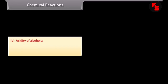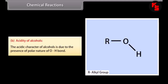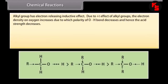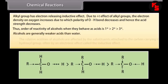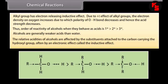The acidic character of alcohols is due to the polar nature of the O-H bond. Alkyl groups have an electron-releasing inductive effect. Due to the +I effect of alkyl groups, electron density on oxygen increases, which decreases the polarity of the O-H bond and hence the acid strength decreases. Thus the order of reactivity of alcohols as acids is primary > secondary > tertiary alcohol. Alcohols are generally weaker acids than water, and their relative acidities are affected by substituents through the inductive effect.